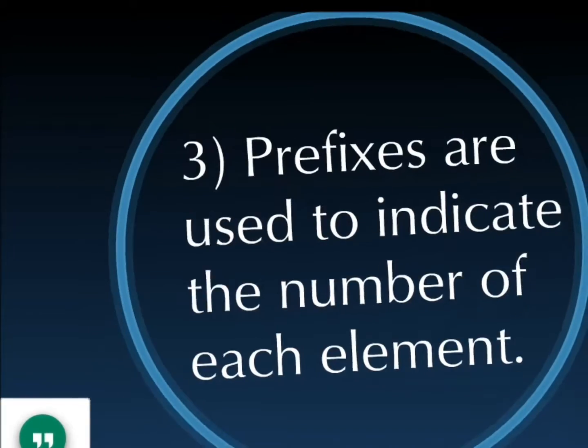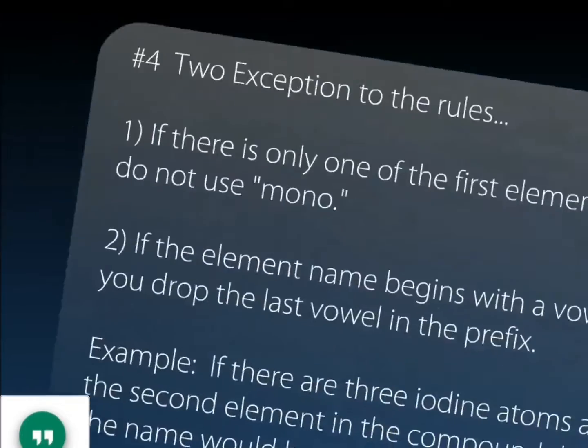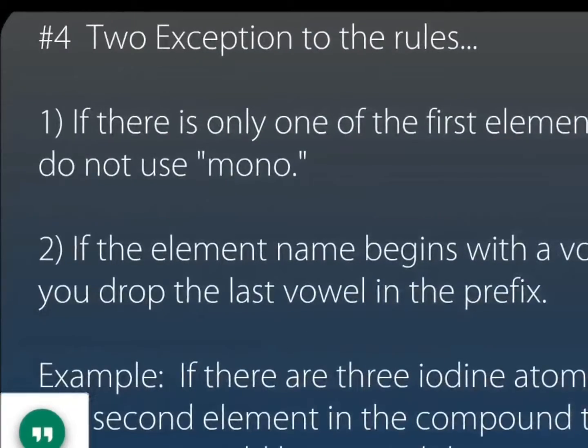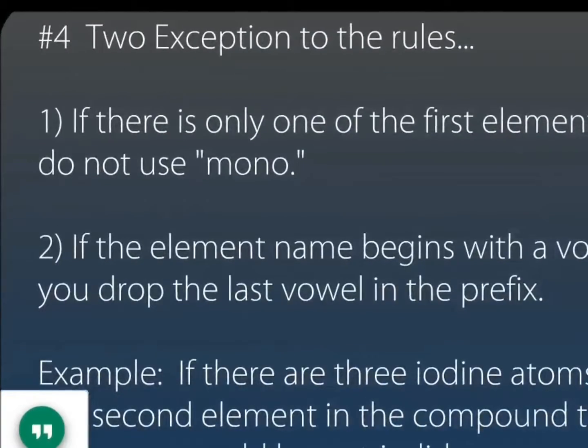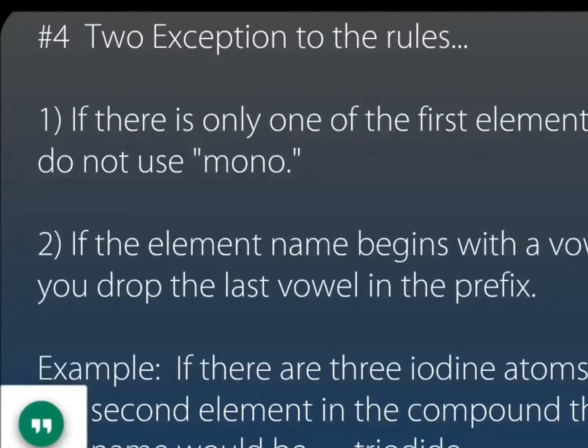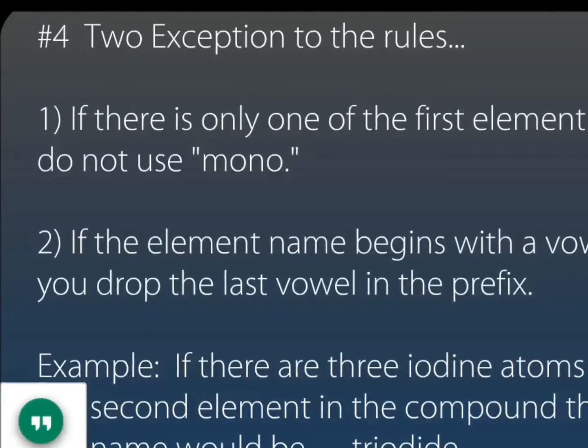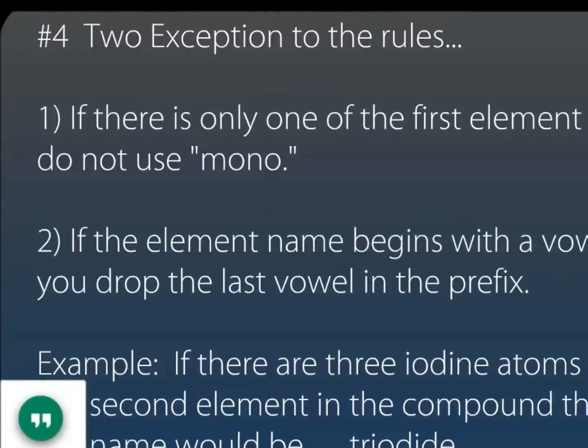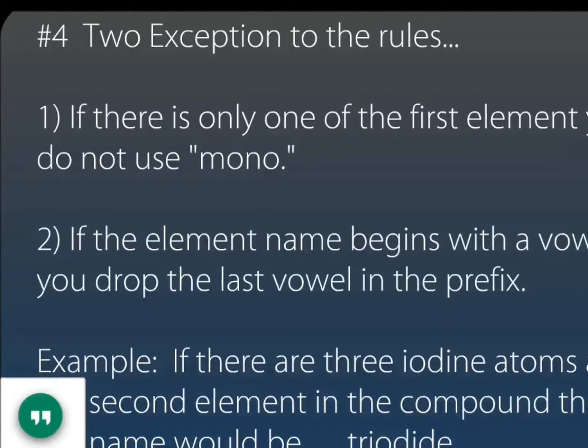So here are some exceptions to the rule. One is if there's only one of the first element, you don't use mono. So you've heard of carbon dioxide before - it's not mono carbon dioxide, it's just carbon dioxide.